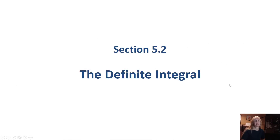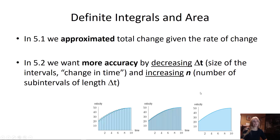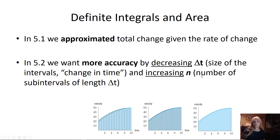We're looking at the definite integral. In the last lecture we approximated total change given the rate of change — we're given the derivative and wanted to figure out how to find the total change. We started by finding the area of rectangles, and what we want to do is decrease the change in t, the width of the rectangles, and increase the number of subintervals.